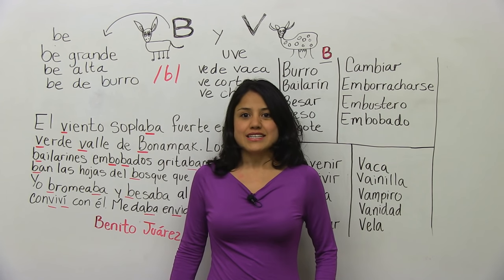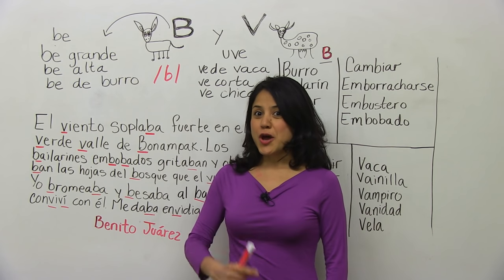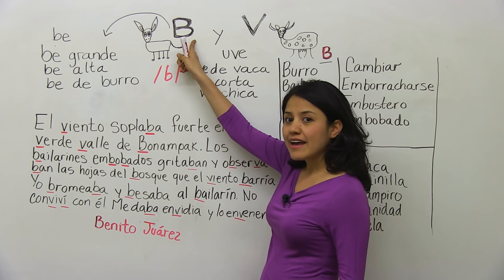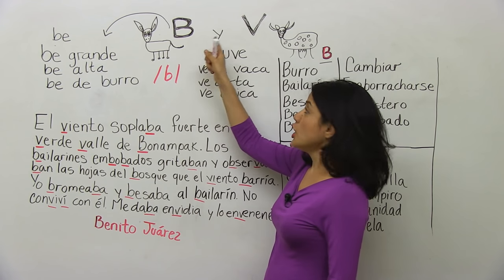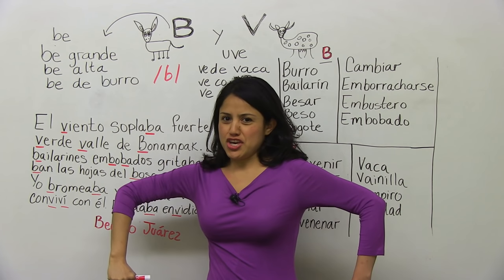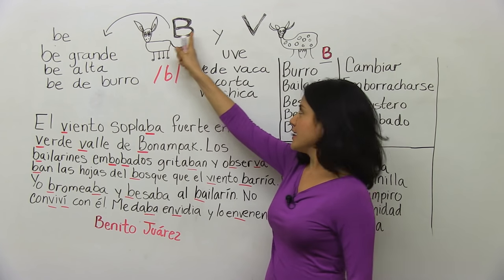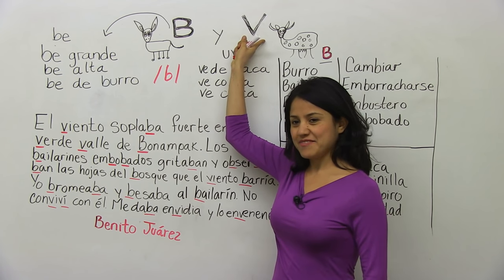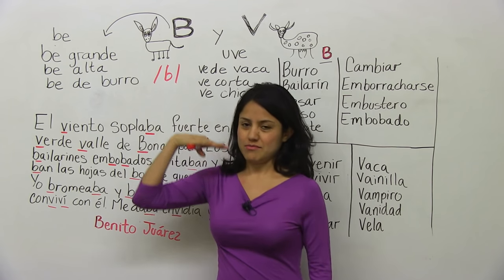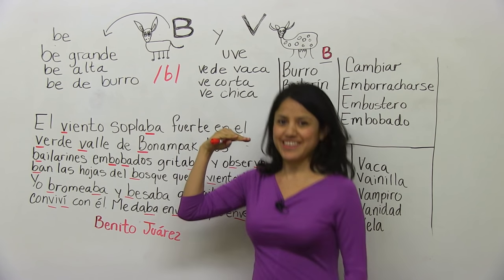Vamos a empezar con los nombres. A lot of people call this B 'B y uve' — B y uve. We also call it 'B grande,' big B, and 'B chica,' small B. Some people also call it 'B alta,' tall B, and 'B corta,' short B.